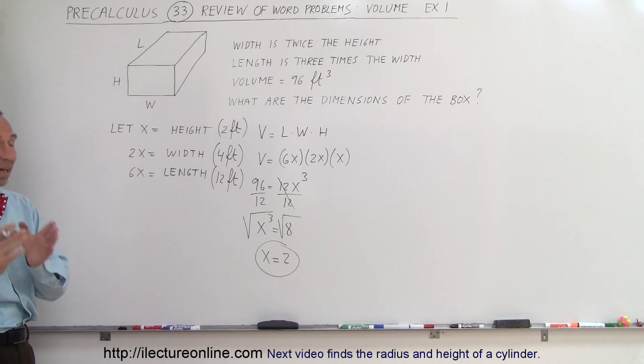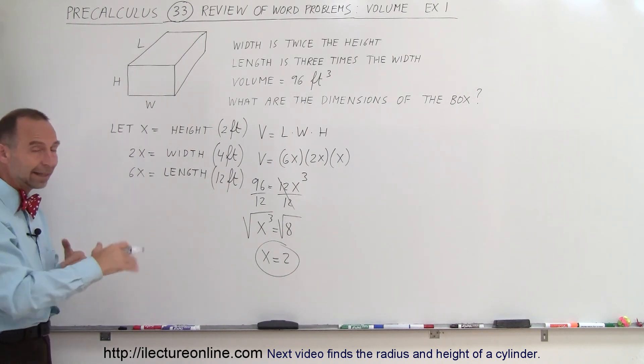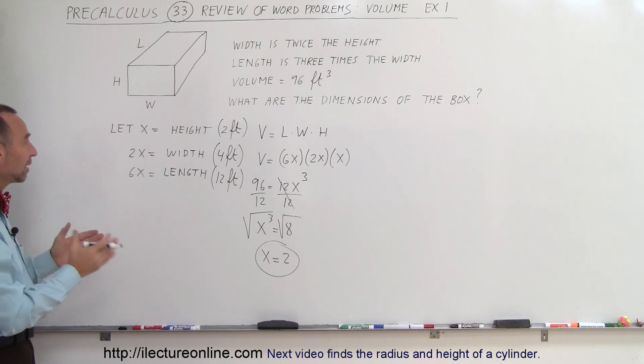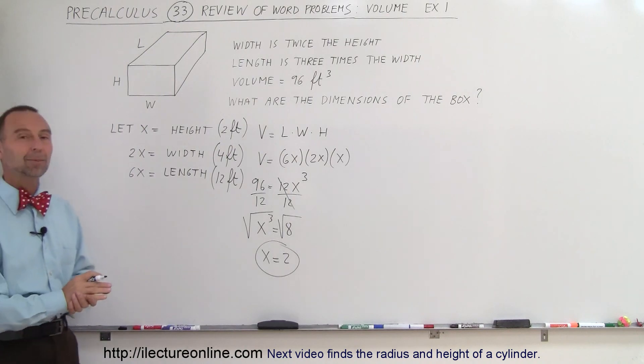The ideal thing always is to let x equal the smallest item, the smallest quantity, the smallest size, and then you build up from there, let everything else be expressed in terms of x that way. And that's usually the easiest way to do it. That's how we do this type of problem.